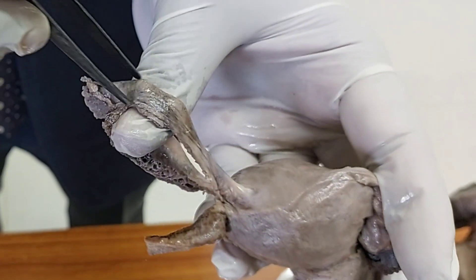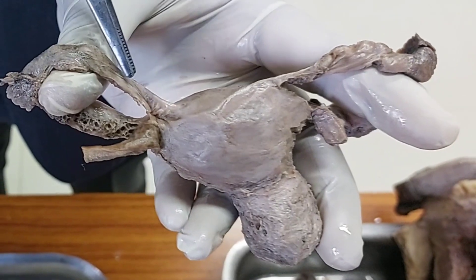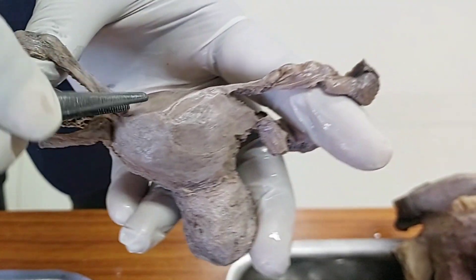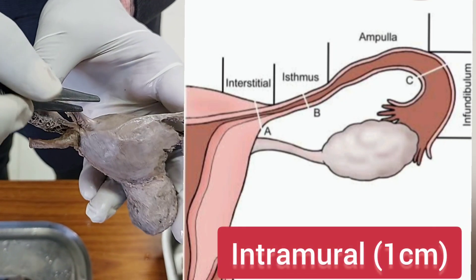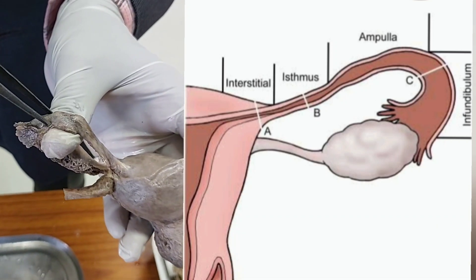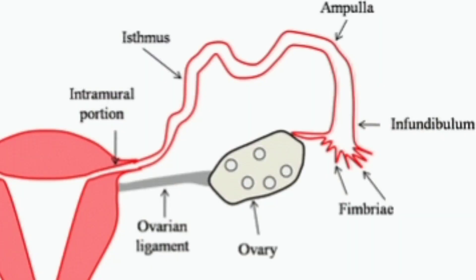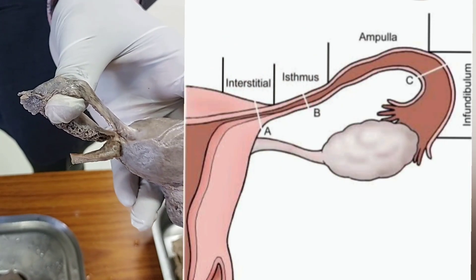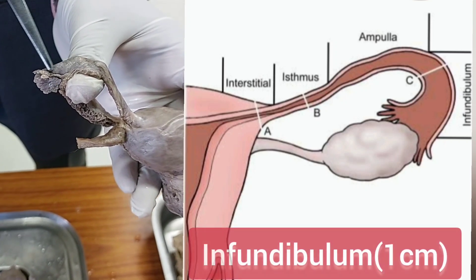This is the fallopian tube of the right side and this is the fallopian tube of the left side. The total length is about 10 centimeters. The parts are: the intramural (intruterine) part — 1 centimeter; the isthmus — 3 centimeters; the ampulla, which is the most dilated part where fertilization takes place and the zygote is formed — 5 centimeters; and the fourth part, the infundibulum — 1 centimeter.